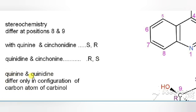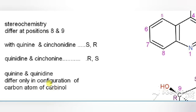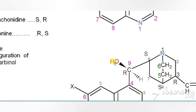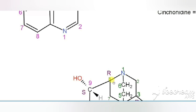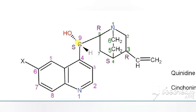The difference between quinine and cinchonidine is only in the configuration of the carbinol carbon. For quinine, the hydroxy group is in beta configuration and hydrogen is in alpha configuration. For quinidine, the hydroxy group is in alpha configuration and hydrogen is in beta configuration.